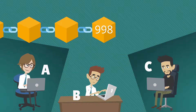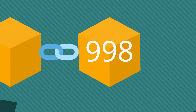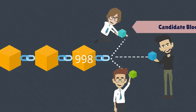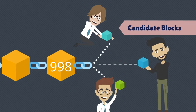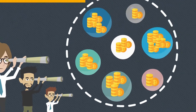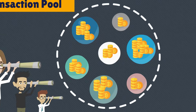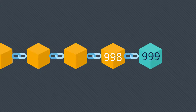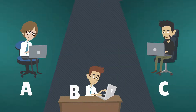Currently, the number of confirmed blocks in the blockchain public ledger is 998. Once the miners identify that the 998th block is a valid block, they try to create a candidate block by adding unconfirmed transactions from the transaction pool.